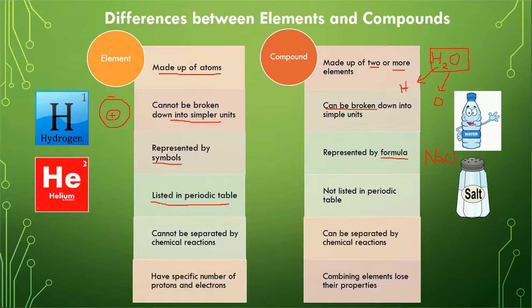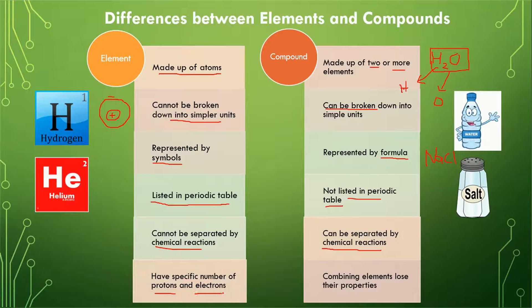All elements are listed in the periodic table, while compounds are not listed in the periodic table. Elements cannot be separated by chemical reactions, but compounds can be separated by chemical reactions. Elements also have a specific number of protons and electrons — for example, hydrogen has one proton in its nucleus and one electron in its orbit.